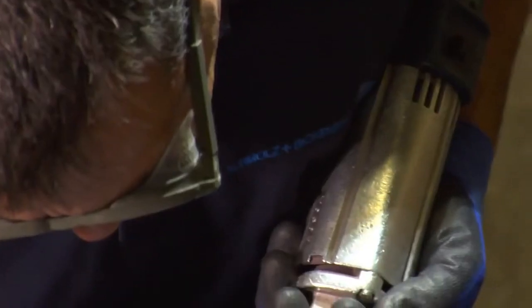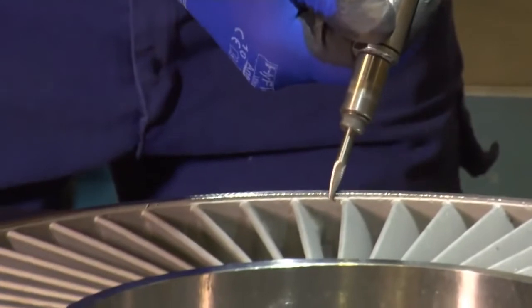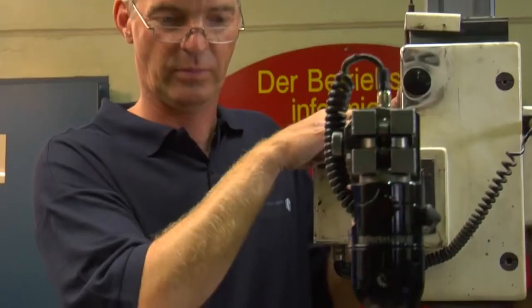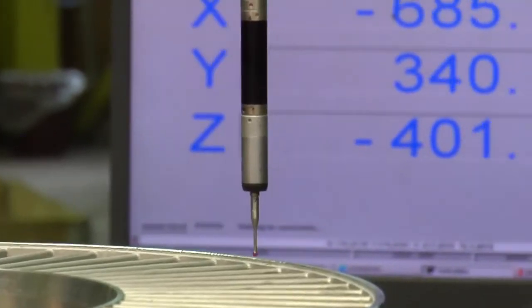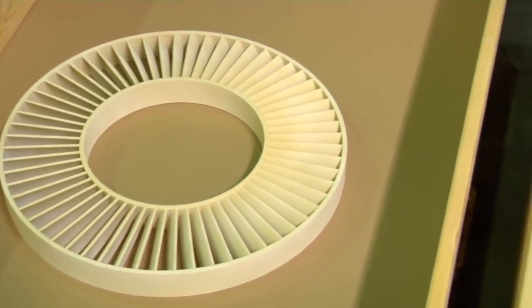Once the casting is complete, gating and feeding systems are removed. Sharp corners are deburred and unwanted surface errors are repaired. This process is followed by non-destructive tests and size inspections in accordance with customer specifications.